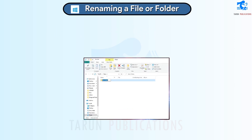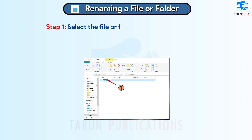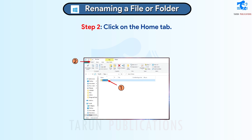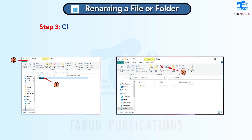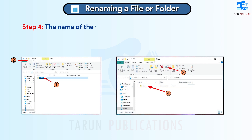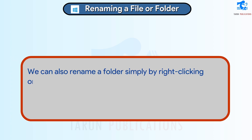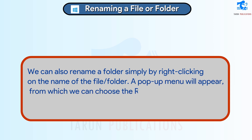Renaming a File or Folder. We rename a file in order to change the current name of the file to a new name. Follow these steps to rename a file. Step 1: Select the file or folder that you wish to rename. Step 2: Click on the Home tab. Step 3: Click on the Rename command in the Organize group. Step 4: The name of the file or folder will appear highlighted. Type the new name in that space and press the Enter key. We can also rename a folder by right-clicking on the name of the file or folder. A pop-up menu will appear, from which we can choose the Rename option.